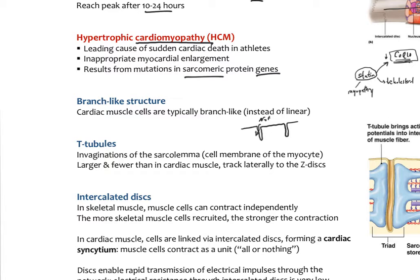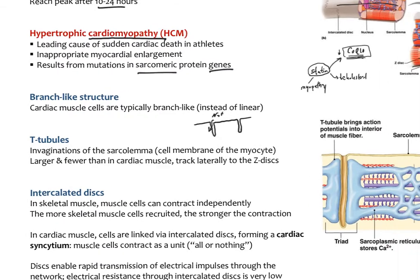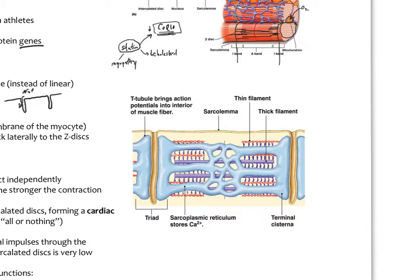In myocytes, the T-tubules are larger, fewer, and they track laterally to the Z-discs. Here is one of those sarcomeres, one of those contractile units of the muscle. Here is the sarcolemma, the plasma membrane of the cardiac myocyte, and here is a T-tubule — see how deeply it goes, right at the Z-disc. This is important because it allows ions to come right in and interact with the sarcoplasmic reticulum, which stores calcium. Whatever happens in the T-tubules can cause a massive release of calcium from the sarcoplasmic reticulum, causing contraction of the actin and myosin.